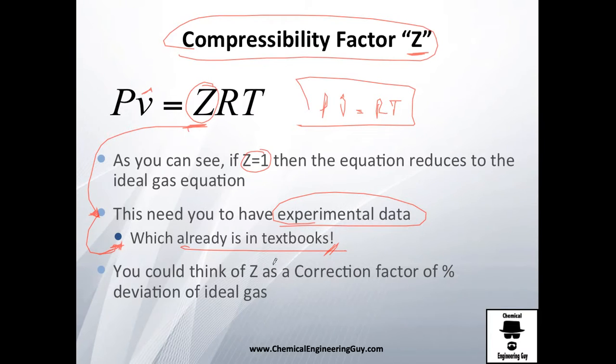I like to call Z or the compressibility factor as a correction factor in percentage. So for example, if this gas deviates 10% more than that of normal gases, then you just add 1.1 to the Z value and you're going to get that 10% that you were talking about.